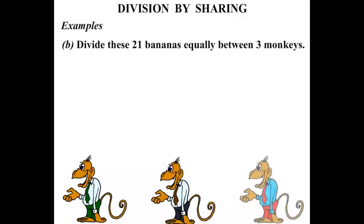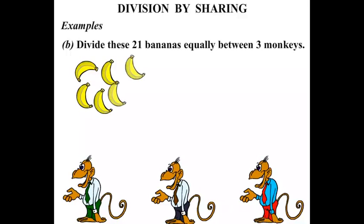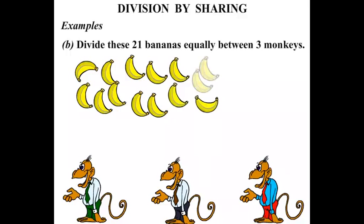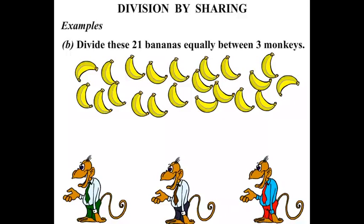The next one, divide these 21 bananas equally between 3 monkeys. Well there's our 3 monkeys but where are the bananas? We need 21 of them. Here we go. 2, 4, 6, 8, 10, 12, 14, 16, 18, 20, 21. 21 bananas.